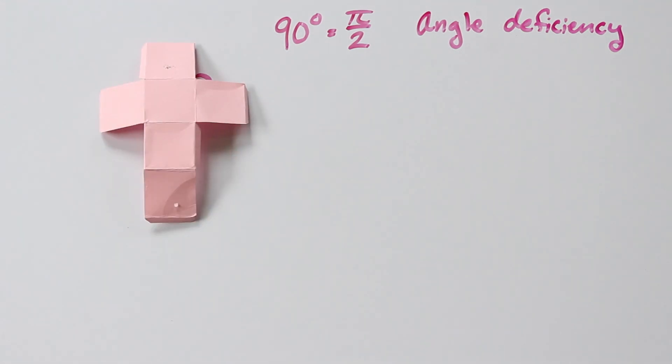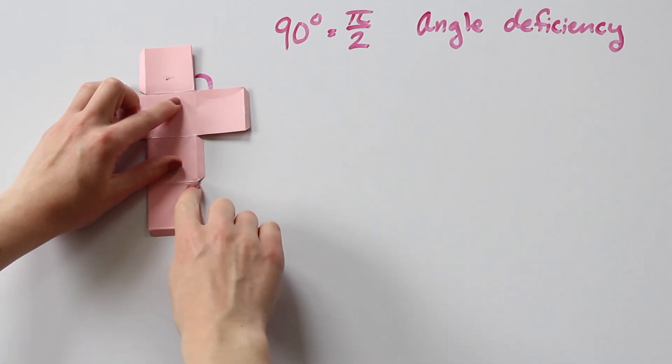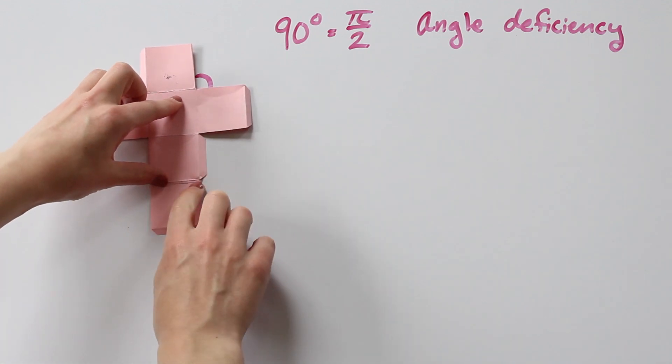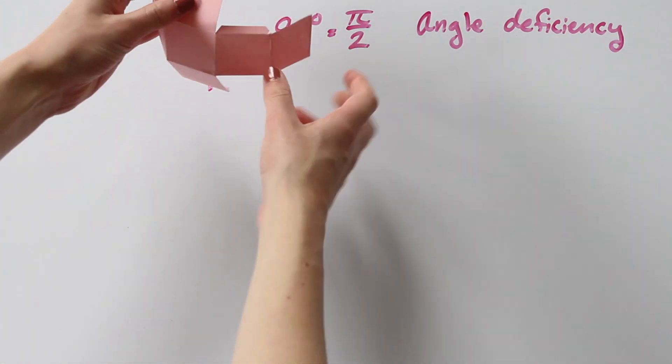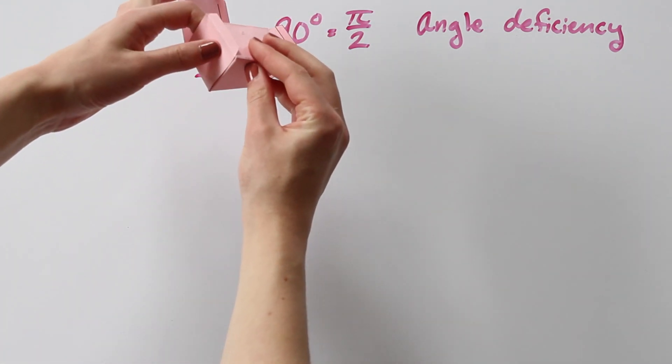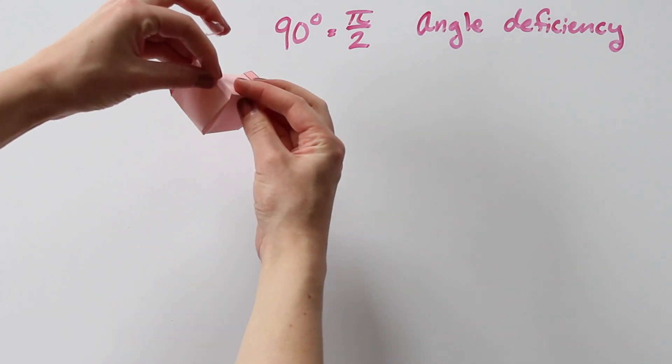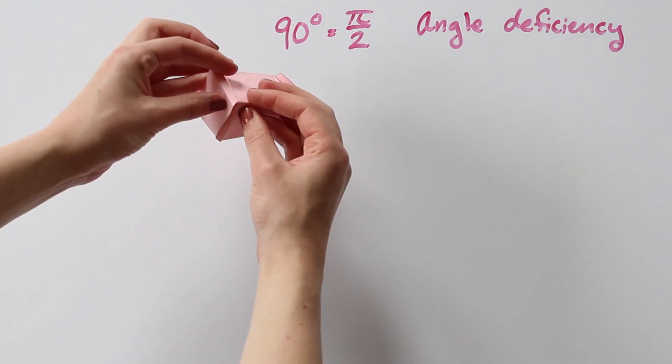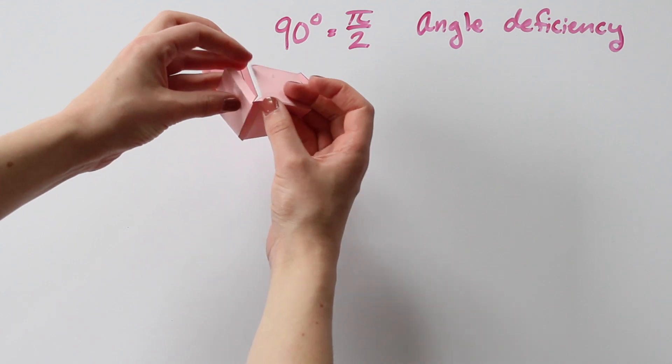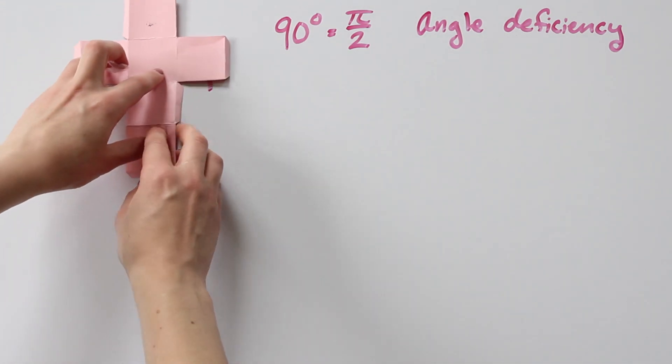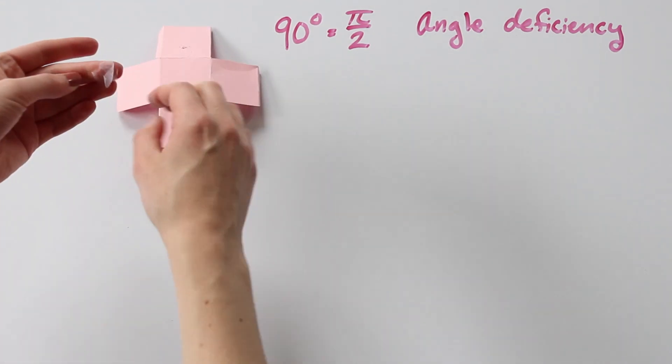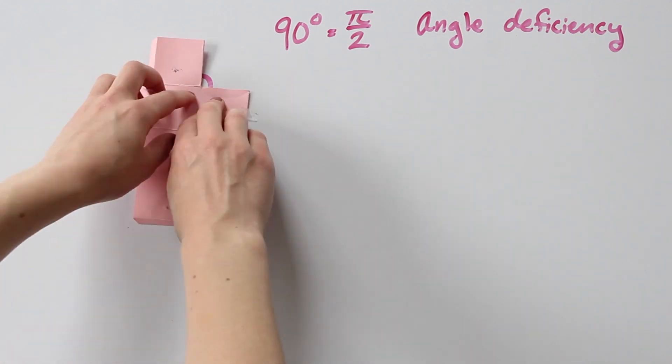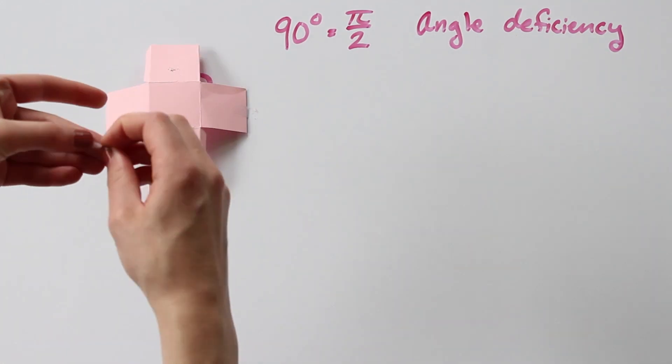All vertices of the cube are identical. Wait, hold on a second. What about this angle right here? Doesn't this look different from the first one that we looked at? Well, we have to think about how this net folds up. When we fold the net into the cube, there will be three squares meeting at this vertex too, making it look identical to the first one that we looked at. So how the vertex looks in the net can be deceiving.